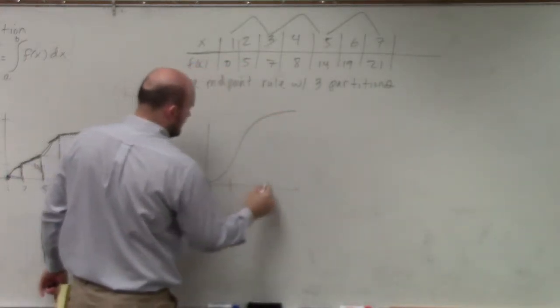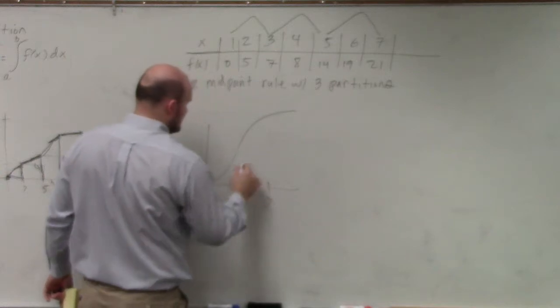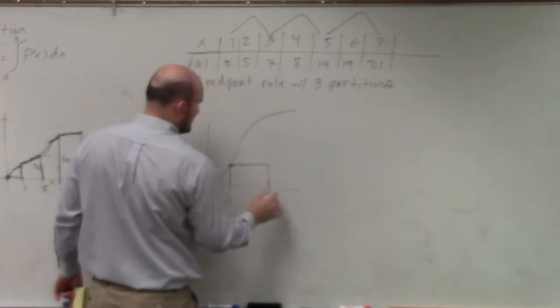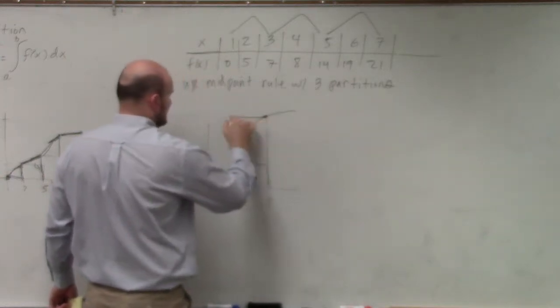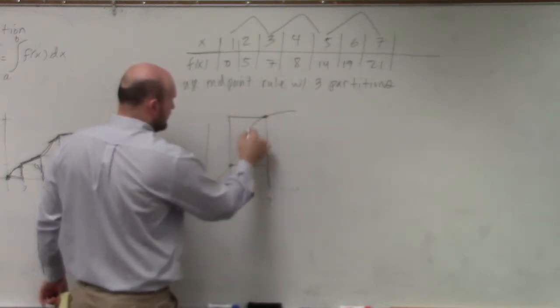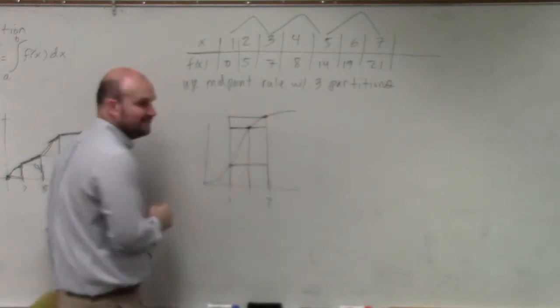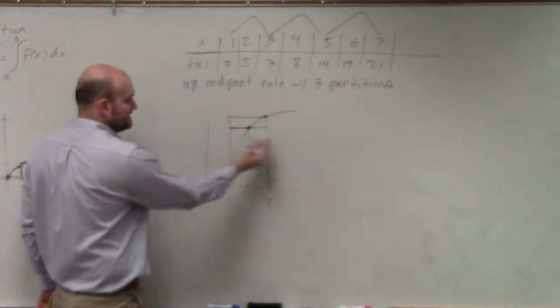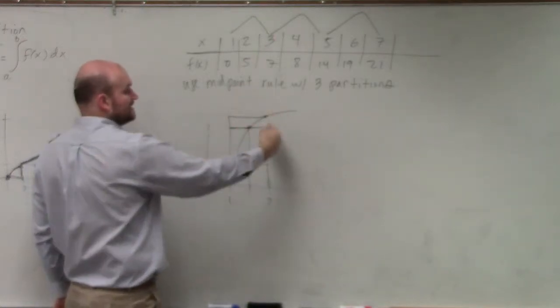So here's one, here's two. If you're using the like, so when you do the left hand, it looks like this. When you do the right hand, it looks like that. When you use the midpoint, you're going from there and going back and forth, right? So we've got to find the distance from at the midpoint from the left to the right.